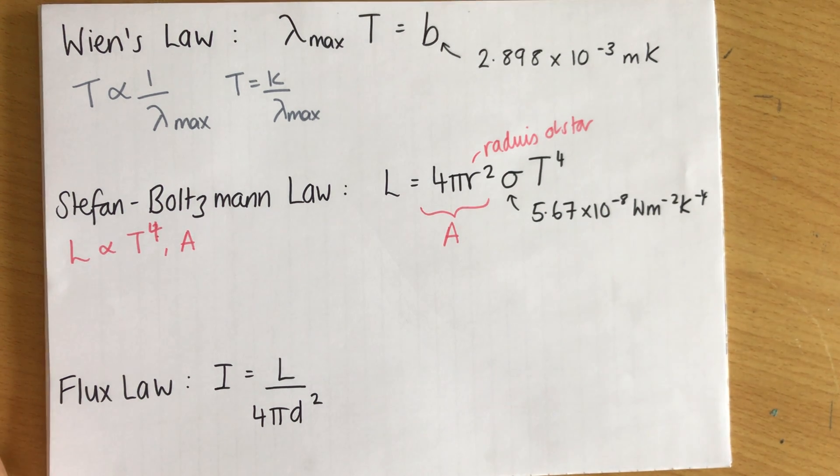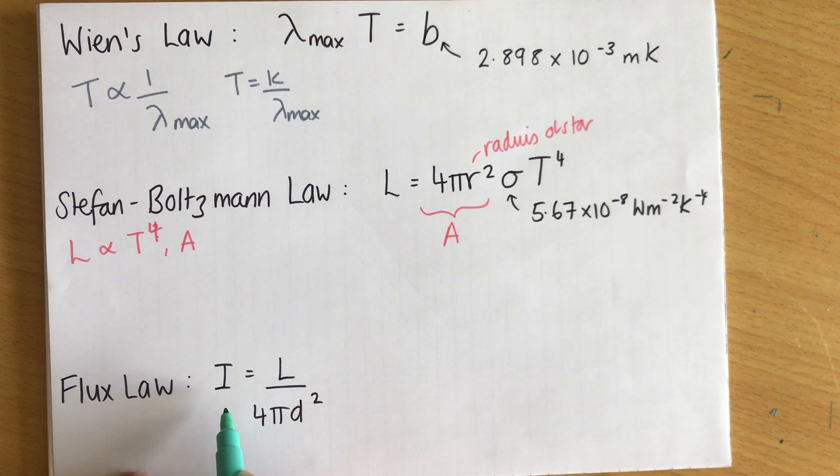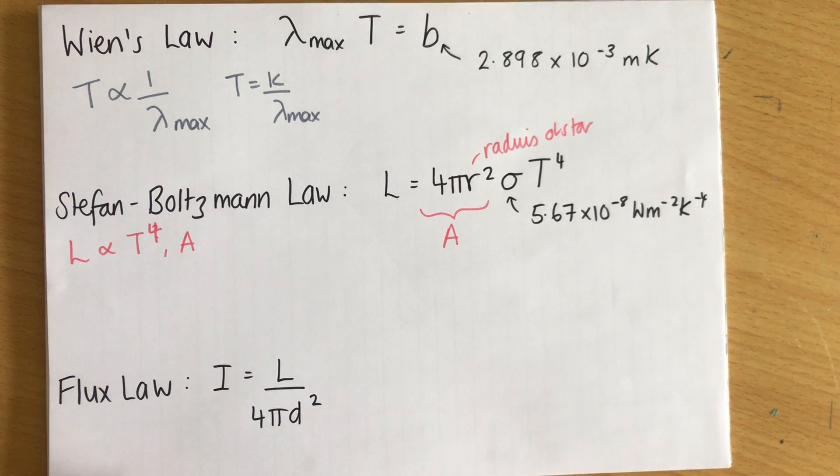Now, these two laws kind of go together with this, the flux law, which we looked at in the last video. And the flux law is how I measure the distance to a star. So the intensity of a star on Earth, that's what I stands for. It's the apparent brightness. When I look at the star on Earth, how bright is it?